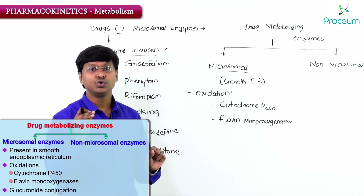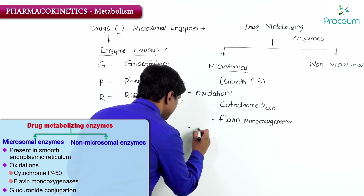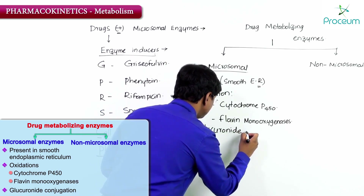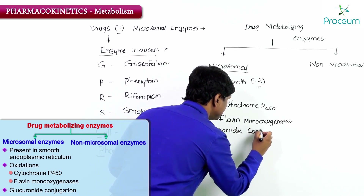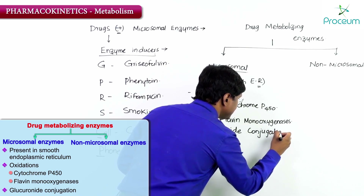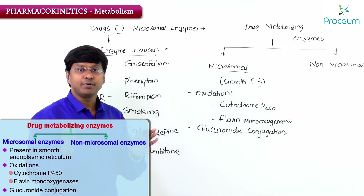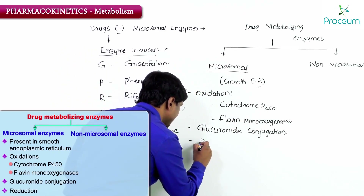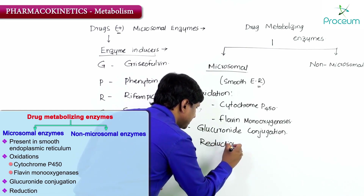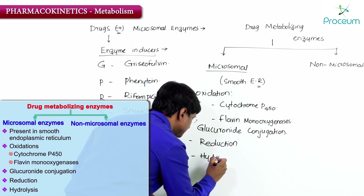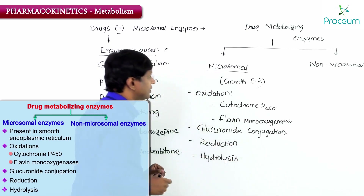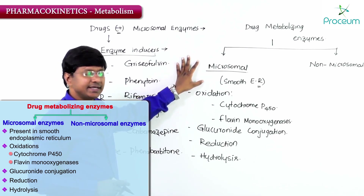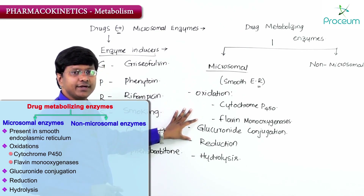Other microsomal enzyme reactions include glucuronide conjugation. The metabolic reactions by microsomal enzymes also include reduction and hydrolysis. So microsomal enzymes can cause oxidation, glucuronide conjugation, reduction, and hydrolysis.